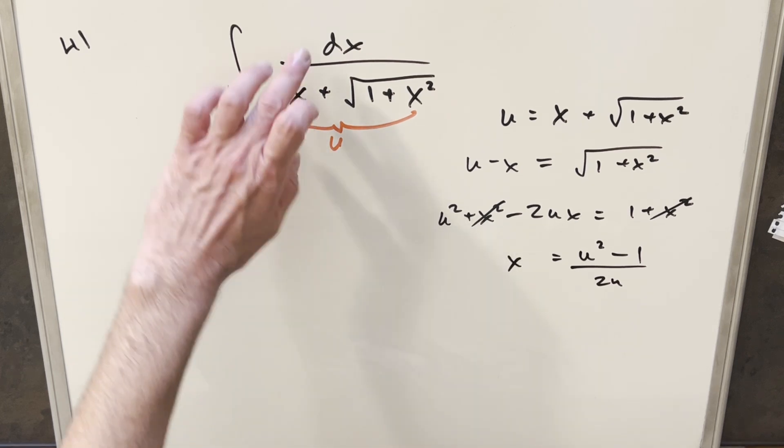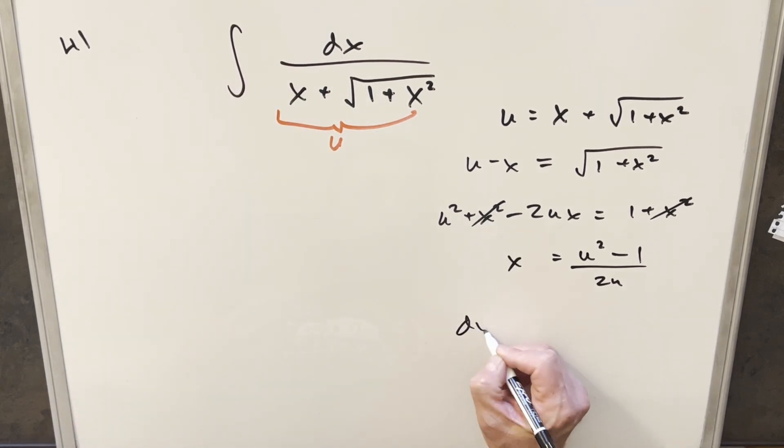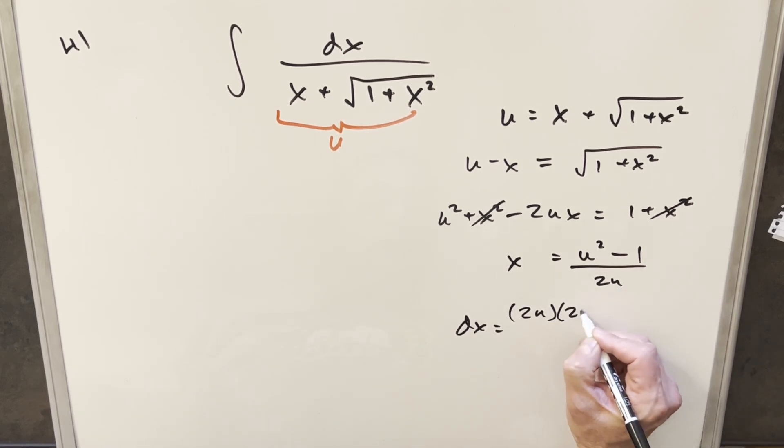And then from here, let's get our dx value by just taking the derivative using the quotient rule. So for dx, first we take the derivative of the numerator, that's going to be 2u, times the denominator, 2u, minus.